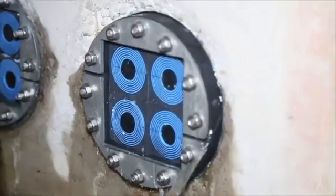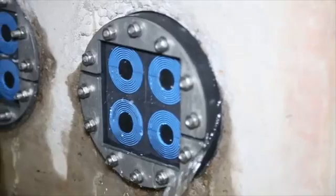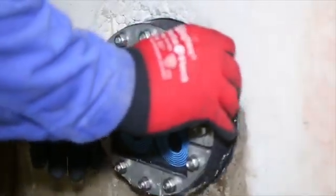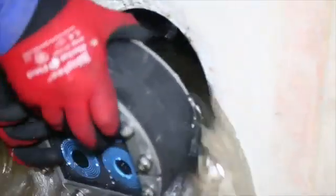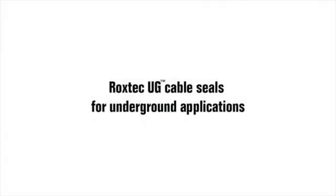Roxtec UG seals are ideal for cables and pipes entering buildings via foundations. The seals keep your site dry and prevent flooding, humidity and rodents from damaging equipment.